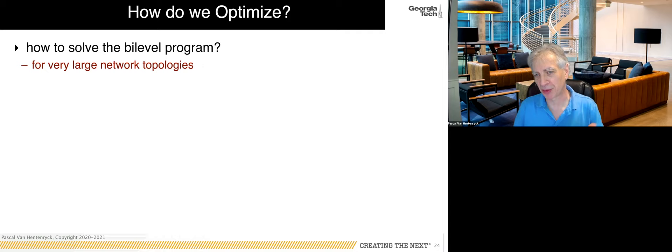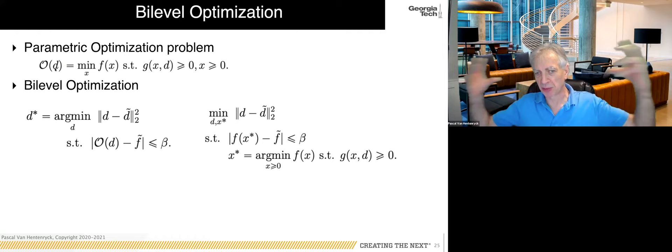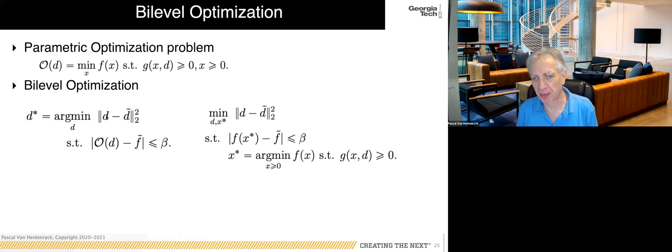To solve this bi-level program for very large topologies, we abstract to a parametric optimization problem depending on a parameter d — think of d as the vector of loads. The bi-level optimization ensures you stay as close as possible to the noisy values while being feasible, so that when you solve the power flow or unit commitment you are really close to the previous optimal solution.